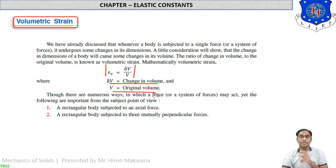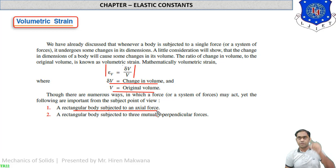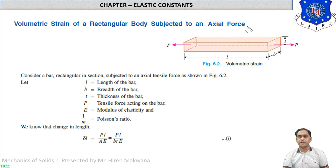Volumetric strain applies to a rectangular body in two cases. Case one: the rectangular body is subjected to an axial force in only one direction, say along the length. Case two: the rectangular body is subjected to three mutually perpendicular forces — forces applied in all three directions of length, width, and thickness.